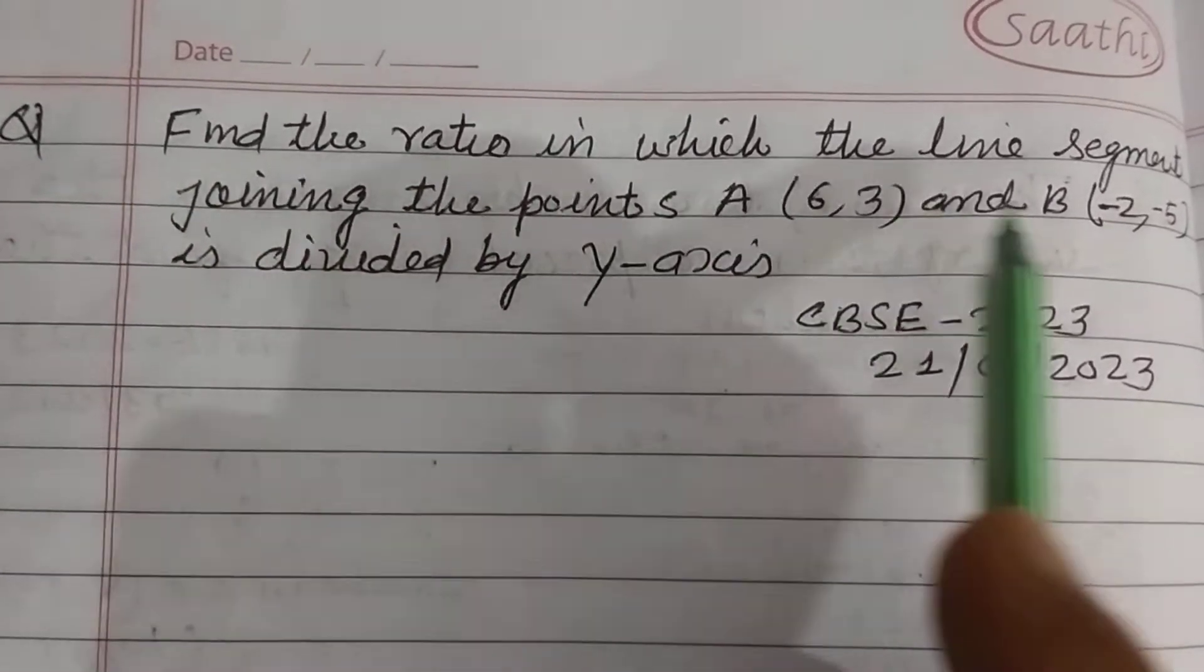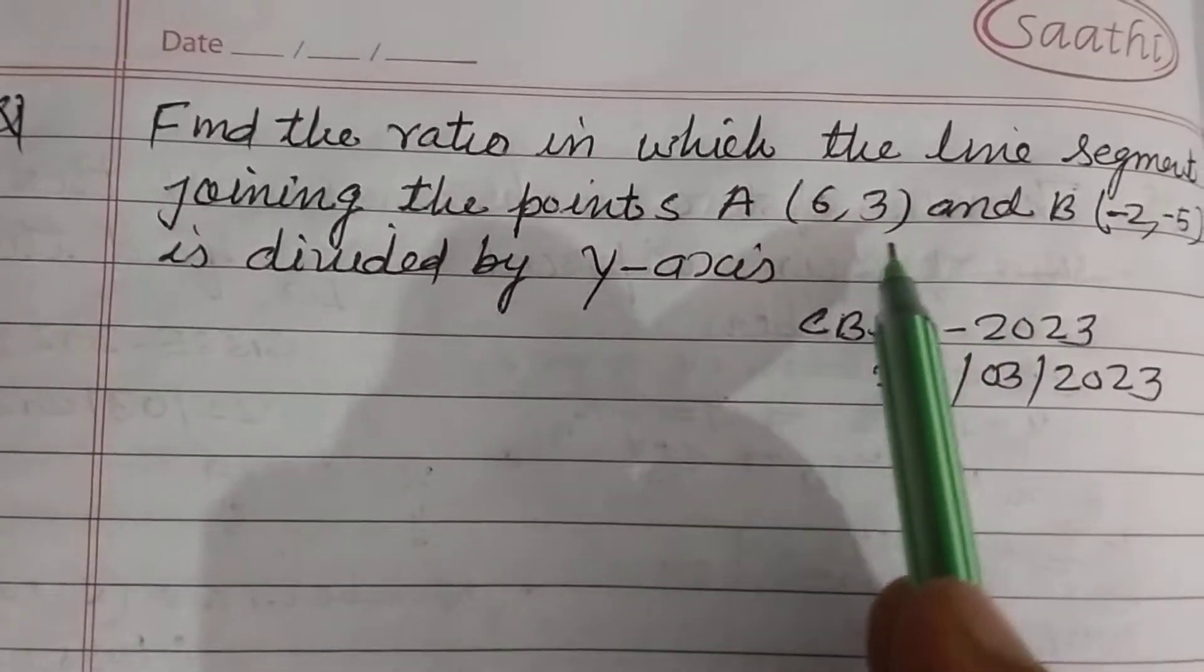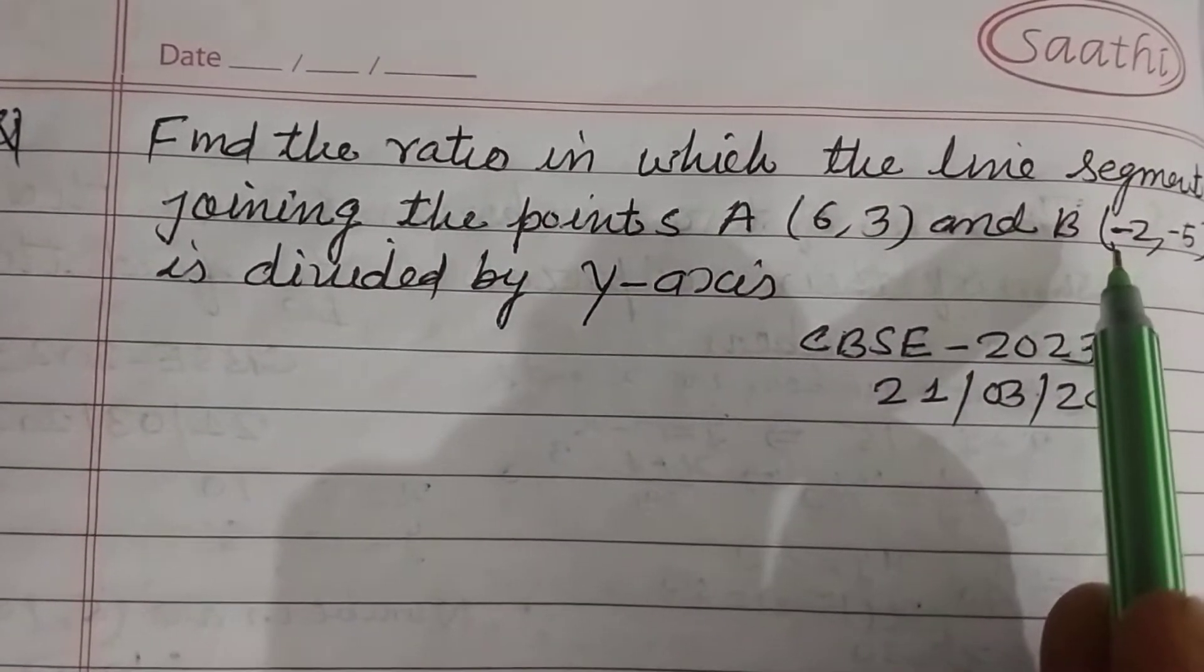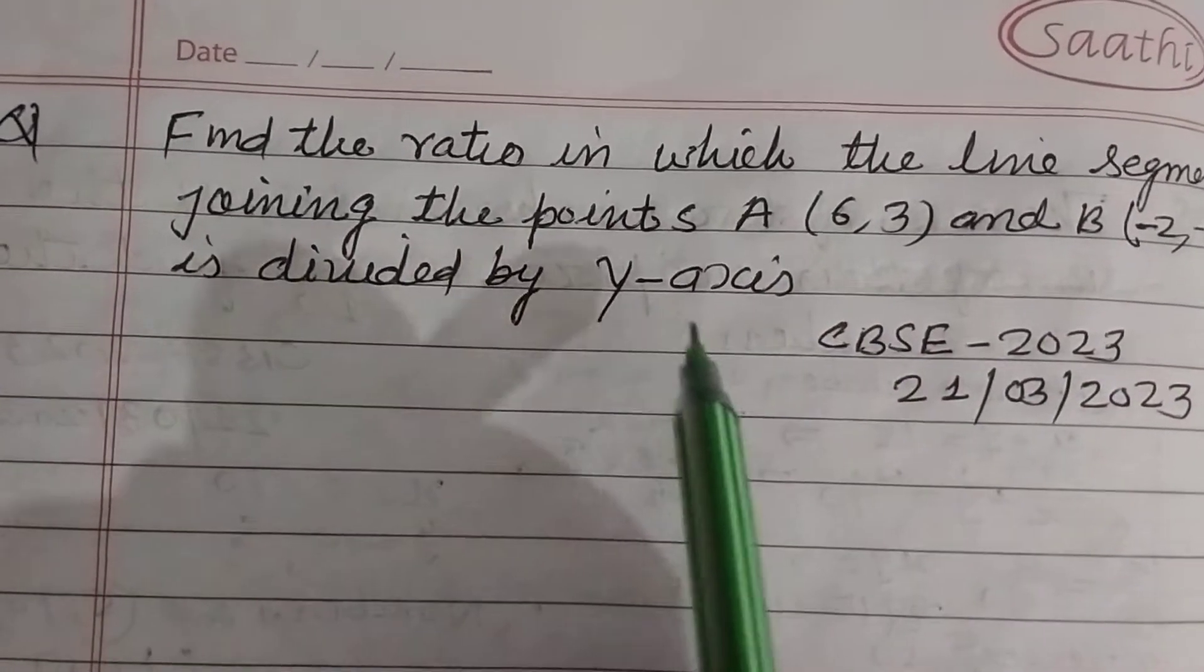Find the ratio in which the line segment joining the points A(6,3) and B(-2,5) is divided by y-axis.